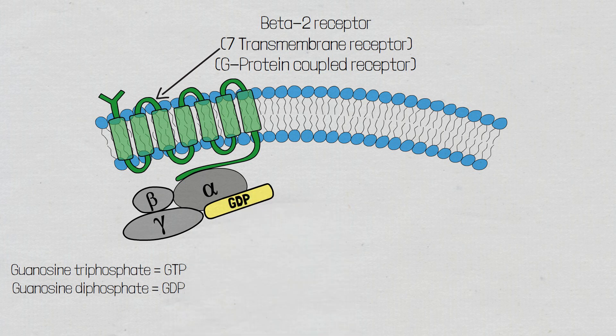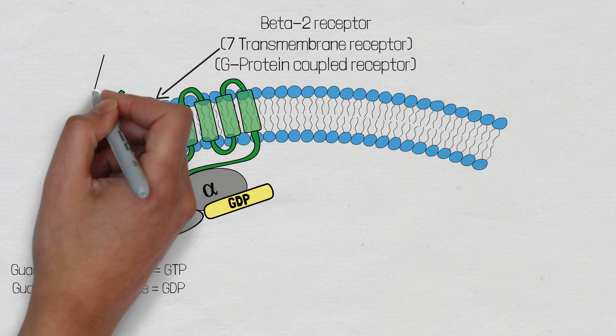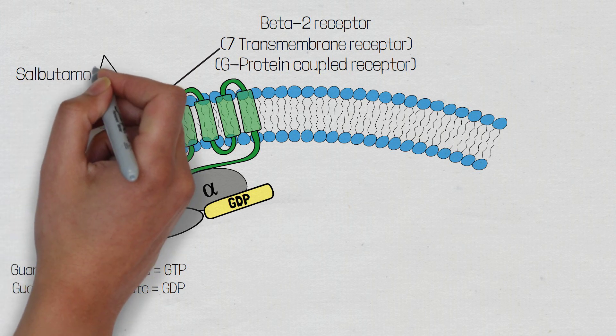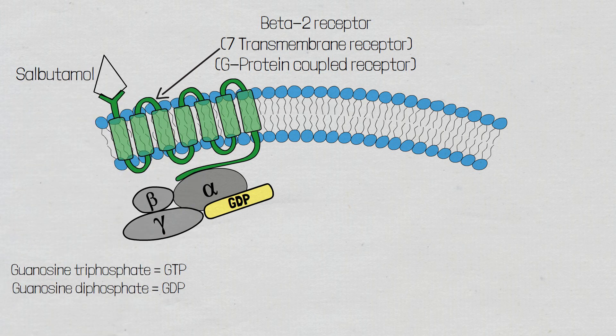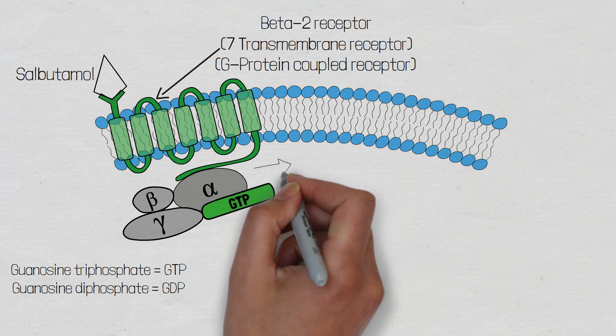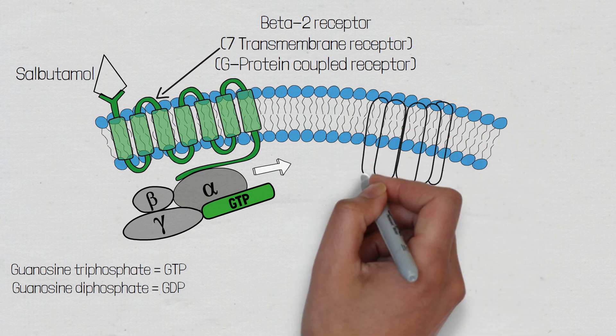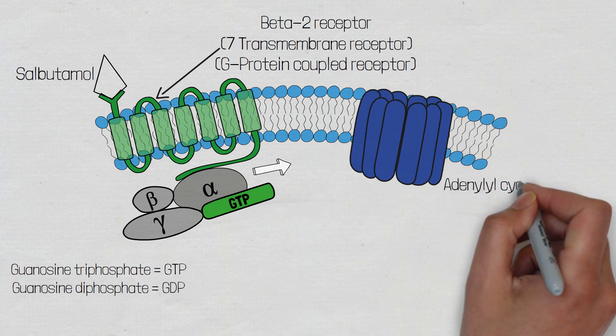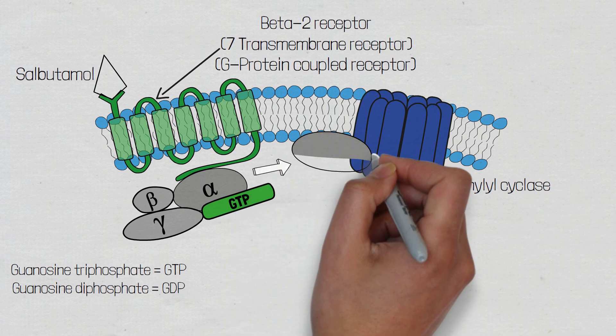Now that we have an understanding of the G-protein coupled receptor's structure, let's look at the intracellular cascade. Once salbutamol has bound to the receptor on the outer surface of the cell, the G-protein coupled receptor will undergo conformational change. This conformational change will cause the alpha subunit to detach from the guanosine diphosphate and instead bind guanosine triphosphate, causing the alpha subunit to disassociate from the beta and gamma subunits and bind to and activate a membrane-bound protein called adenylyl cyclase.